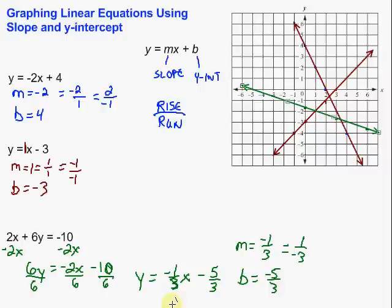So again, graphing linear equations using slope and y-intercept sure beats graphing using ordered pairs. If we can pick out the y-intercept, which is our b, and our slope — the coefficient of the x term — we can start at the y-intercept and then use the slope to get as many points as we want and draw our line. Hope that was helpful. Good luck.